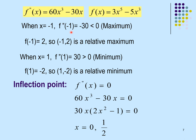Pick x = −0.5 for the first interval, x = 0.25 for the second, and x = 0.75 for the third. Substitute each into f''(x): the first interval gives a positive value (concave upward), the second gives a negative value (concave downward), and the third gives a positive value (concave upward). This helps us visualize the shape of the graph.